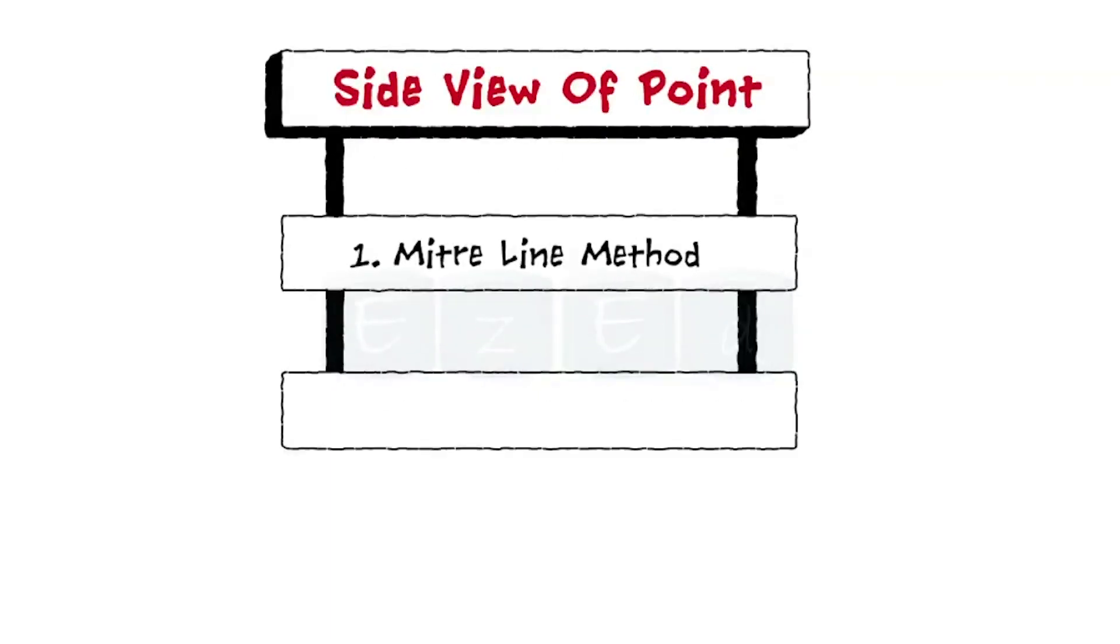Let us see how to find the side view of a point. The side view can be found by two methods. One is meter line method and second is the arc method.